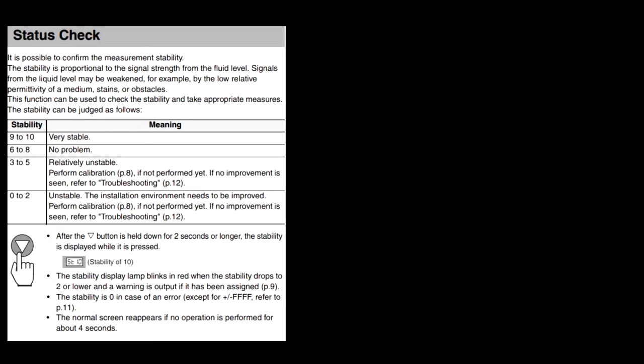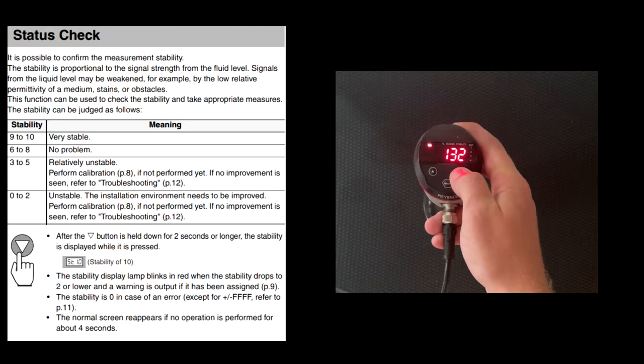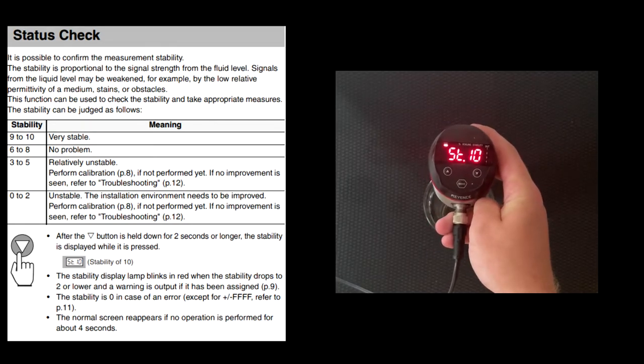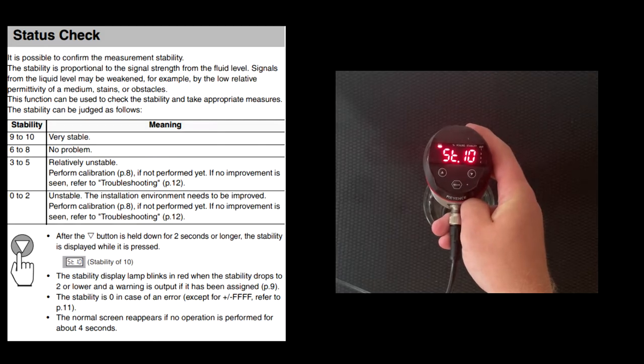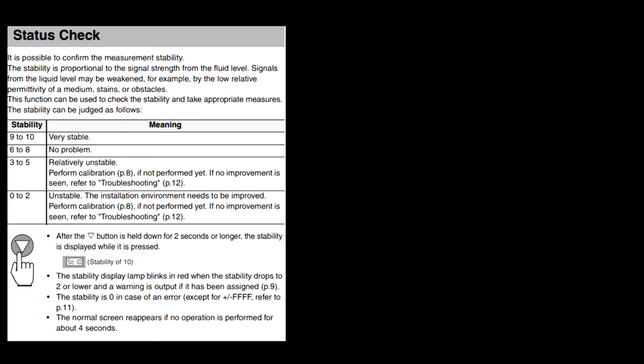Now that you've successfully calibrated and zero shifted the FL, it's time to confirm that we have good stability. To do this, on the main display, you're going to hold the Down button for two seconds or more until ST and a number, or a digit, is displayed. 9 to 10 is very stable, and that means you performed everything correctly.